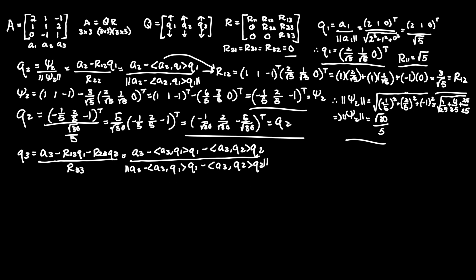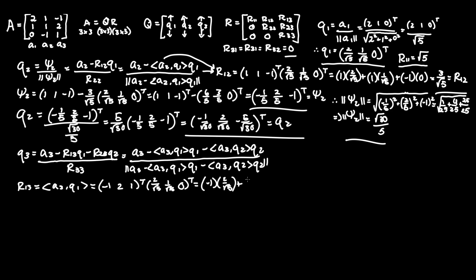If this were a 4x4 or larger, you'd keep repeating this pattern by subtracting further projections. Let's start with R13, which equals the inner product of A3 and Q1. The column A3 is (1, 2, 1) transposed times Q1 = (2/root5, 1/root5, 0). This gives -1 times 2/root5 plus 2 times 1/root5 plus 1 times 0, which is -2/root5 plus 2/root5, equals 0.